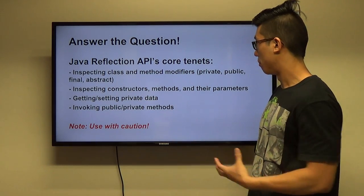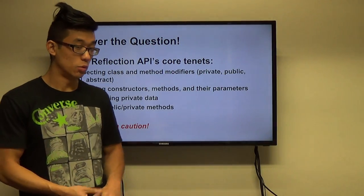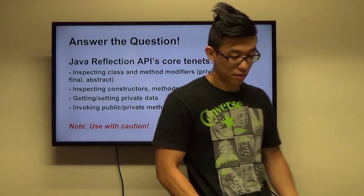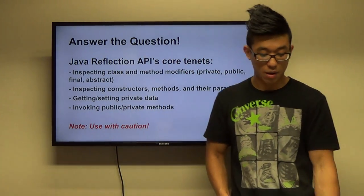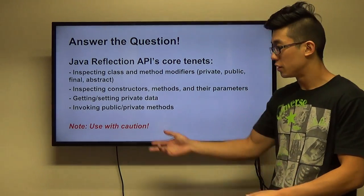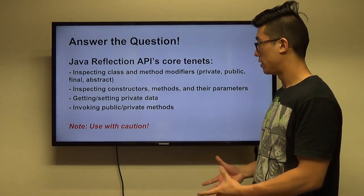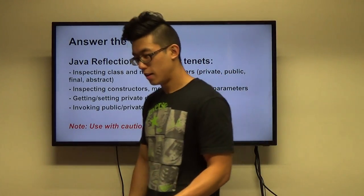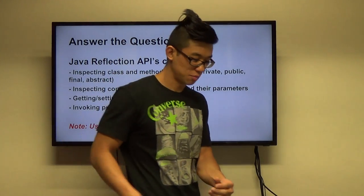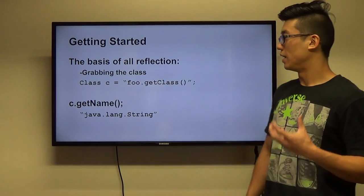Some of the Java Reflection API's core tenants are: inspecting class and method modifiers — you can look at a class or method and see if it's private, public, final, or abstract. You can inspect constructors and their parameters, you can invoke them, and you can get and set private data. Use with caution, because you can do so many powerful things.